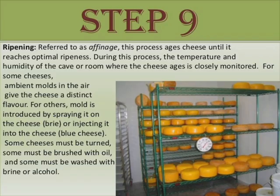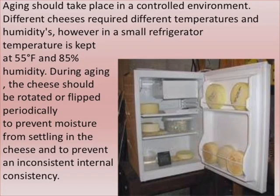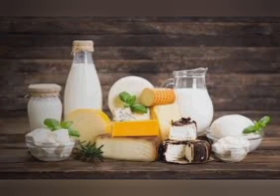Step nine is ripening, also referred to as aging. This process ages cheese until it reaches optimal ripeness. The temperature and humidity of the room where the cheese ages is closely monitored. For some cheeses, ambient molds in the air give the cheese a distinct flavor; for others, mold is introduced by spraying it on the rind or injecting it into the cheese, as with blue cheese. Some cheeses must be turned, some brushed with oil, and some washed with brine. Aging should take place in a controlled environment — typically 55 degrees Fahrenheit and 85% humidity in a small refrigerator. The cheese should also be rotated periodically to prevent moisture from settling and to ensure consistent internal consistency.